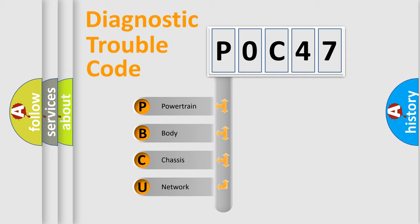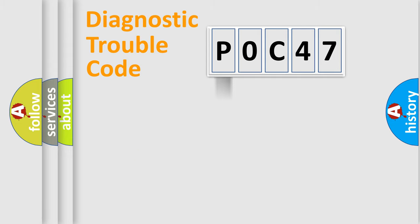We divide the electric system of automobile into the four basic units: Powertrain, Body, Chassis, and Network. This distribution is defined in the first character code.